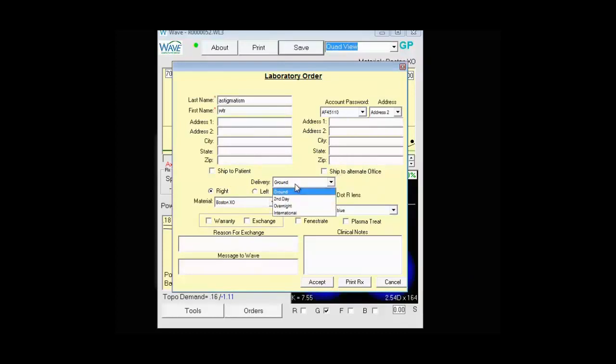You can select your delivery method. You can specify if it's a right or a left lens. This is where you also choose your lens material from the wide amount of choices we have. Based upon your lens material, you can select the lens color. You can choose whether or not to dot the right lens, fenestrate, or plasma treat.